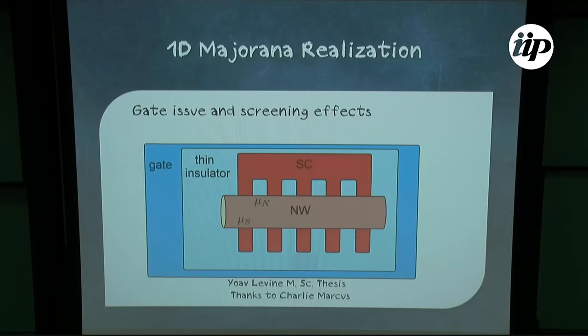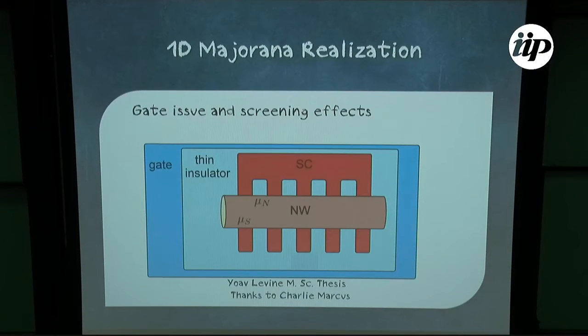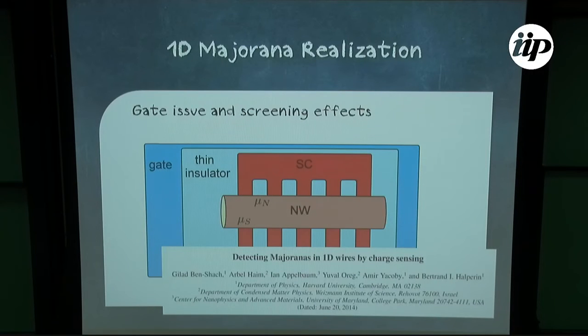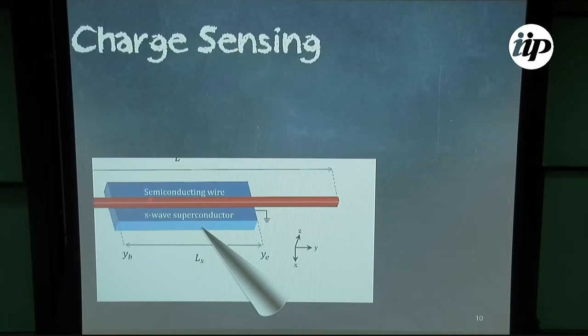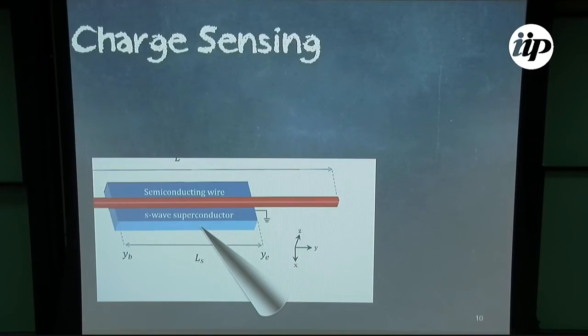The electrochemical potential is in equilibrium. You have one electrochemical potential, but the distance from the bottom of the band differs — you have more or fewer electrons beneath the superconductor versus the exposed regions. The nice thing about this structure is that you can imagine coming with an STM probe and measuring both the tunneling density of states and also sensing the charge on the wire.